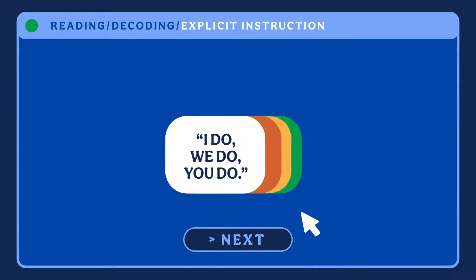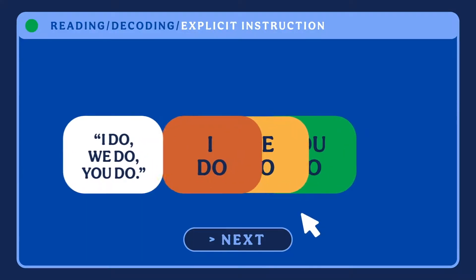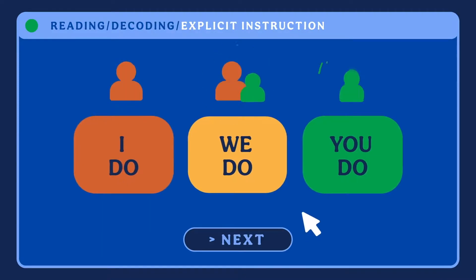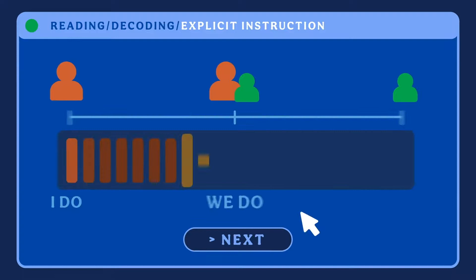This model is a form of explicit instruction because it includes a gradual release of responsibility, where the teacher first models and then provides guided practice, or a just right level of support.